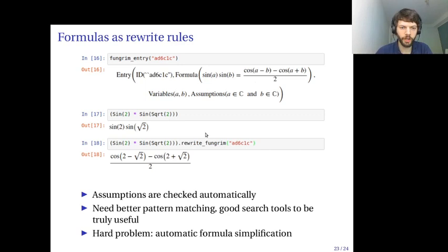It does some pattern matching and it also checks that the assumptions hold for the matched parameters. It's not very useful right now because the pattern matching really needs to be improved and it would be more useful with some search tools. I think even more interesting would be to try to automatically simplify formulas using this kind of strategy by automatically finding rewrite rules that lead to simplifications. But this is obviously a much more difficult problem to do very well.